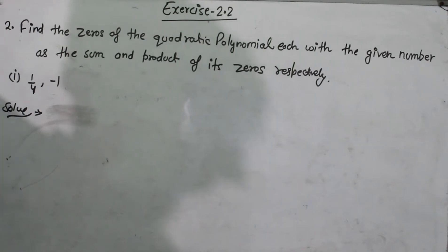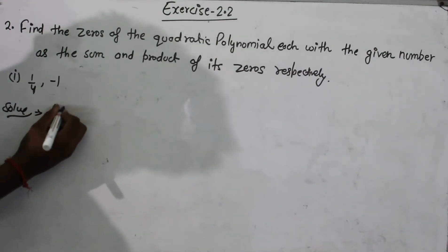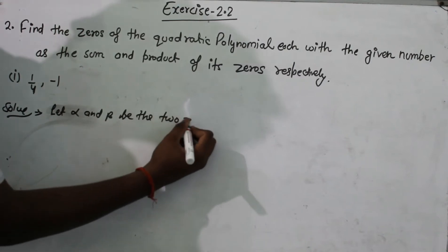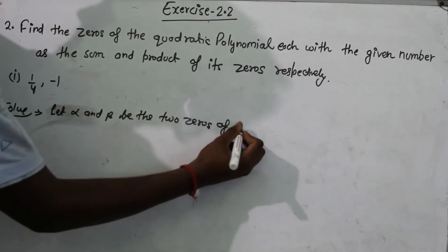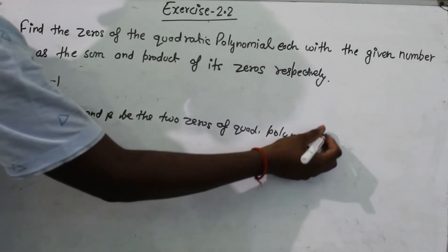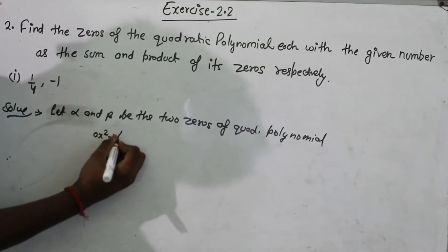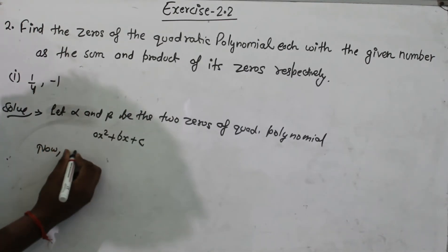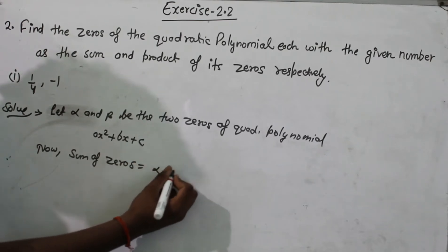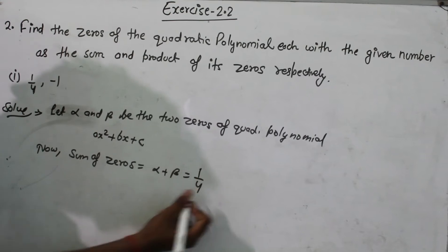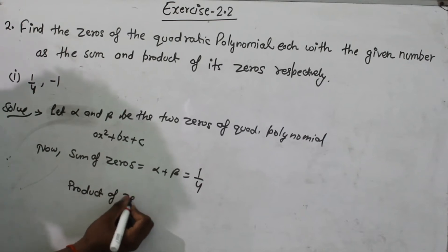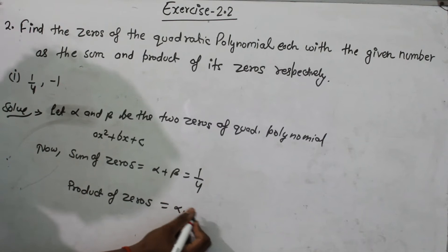Let alpha and beta be the two zeros of the quadratic polynomial ax² + bx + c. We are given that the sum of zeros, alpha plus beta, is equal to 1/4. And the product of zeros is given as minus 1.